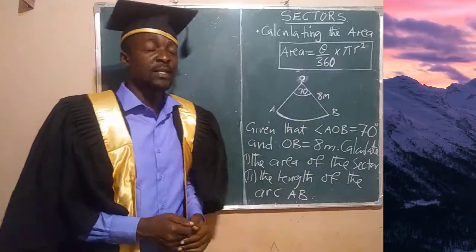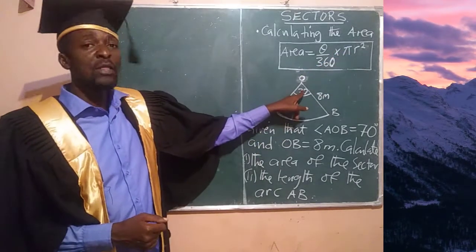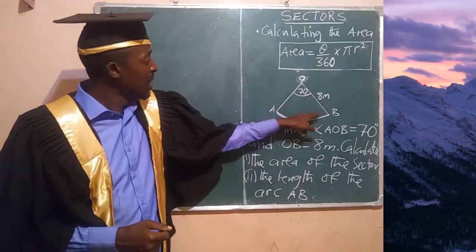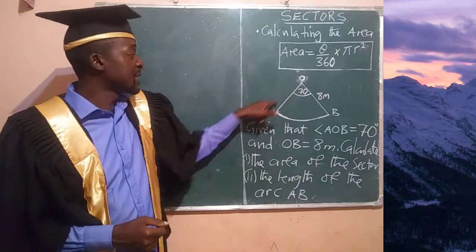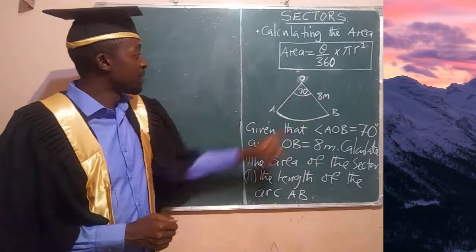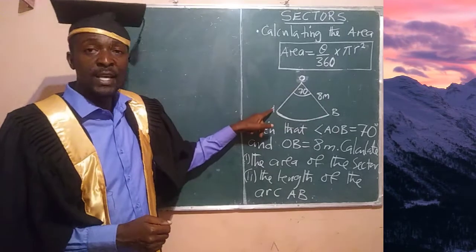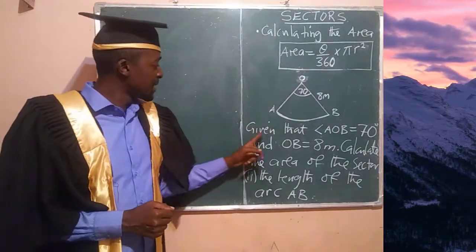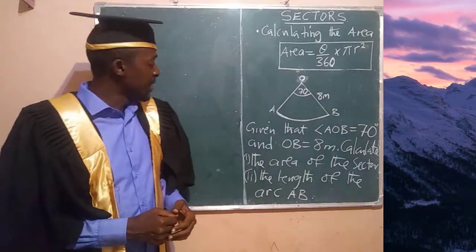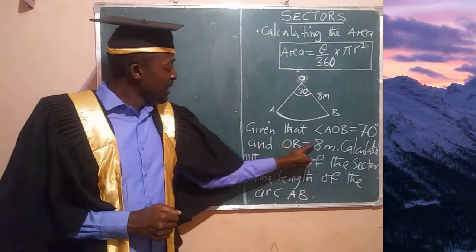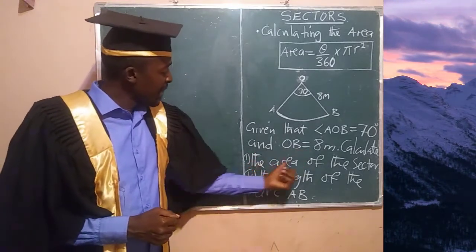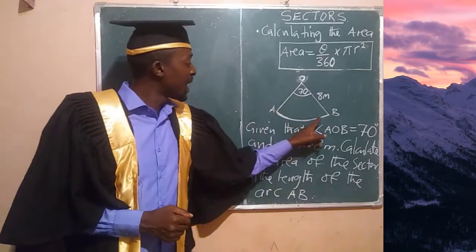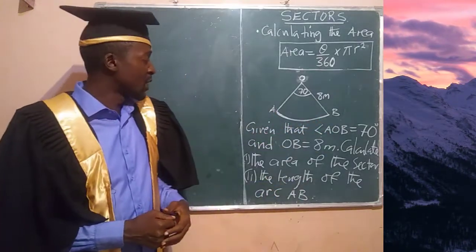The formula is theta over 360 times pi r squared, where theta is the angle and the radius is the length from O to B or O to A, since OA and OB are the same — both 8 meters in this case. The question gives us angle AOB as 70 degrees and OB as 8 meters, and asks us to calculate: number one, the area of the sector, and number two, the length of arc AB.